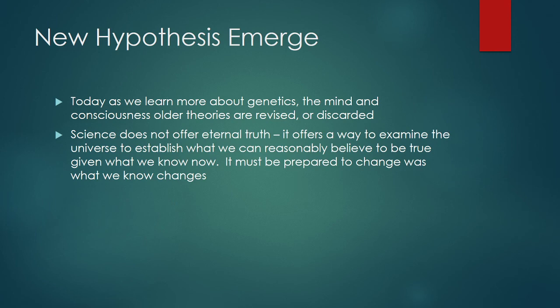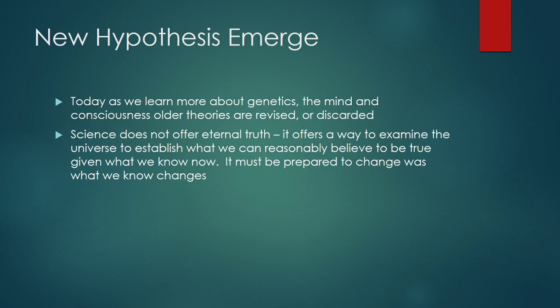As we learn more about genetics, the mind, and consciousness, some older theories need to be revised or discarded, because science does not offer us eternal truth. There was a debate between a scientist who believed in a round earth and a flat earther. They asked the scientist what would it take to change his mind, and he said rigorous scientific evidence. They asked the flat earther, and he said nothing — the earth is flat, period. The difference between science and belief is encapsulated in that. If you take evidence, evaluate it, and change your opinion, you are engaging in science. If you say it's absolute truth and nothing changes, that's not science — that's faith. Faith can have a role in life, but it can't have much of a role in science.